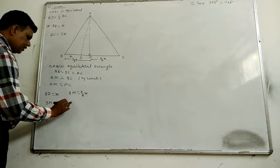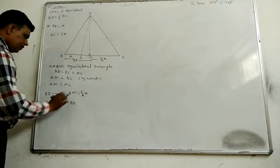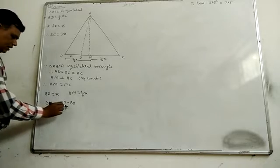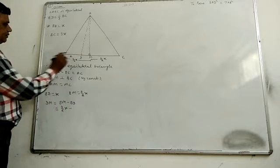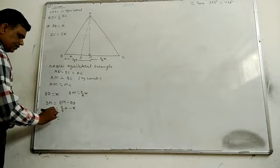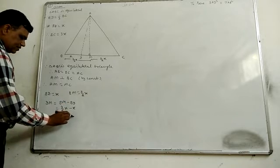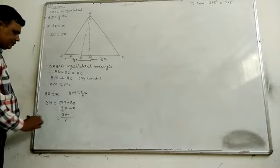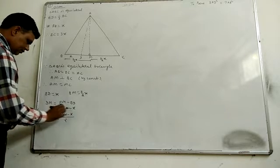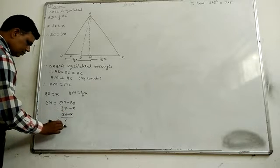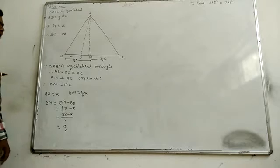BD is x and BM is 3 by 2 x. So MD equals BM minus BD, which is 3 by 2 x minus x, equals x by 2. MD equals x by 2. Correct or not?